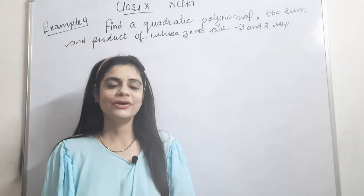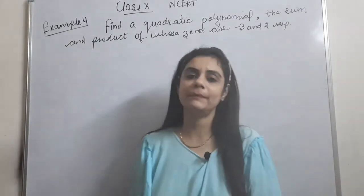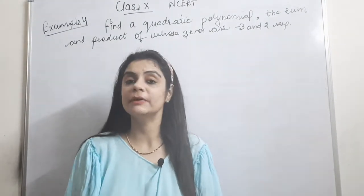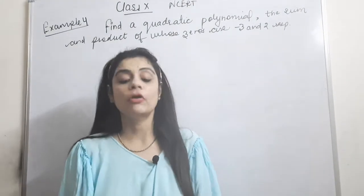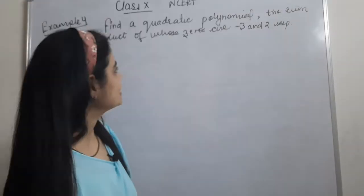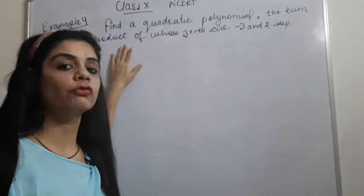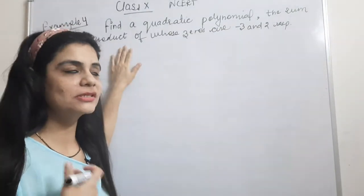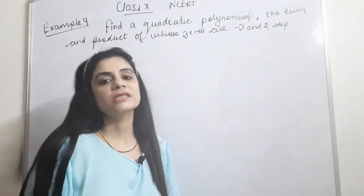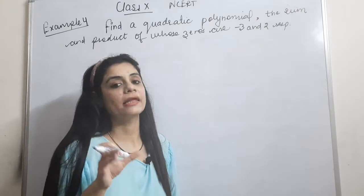Hello students, how are you? We have completed till example number three of the chapter Polynomials. Today we will be doing from example number four. Example four says: find a quadratic polynomial the sum and the product of whose zeros are minus three and two respectively. So what do we have to do with a quadratic polynomial?